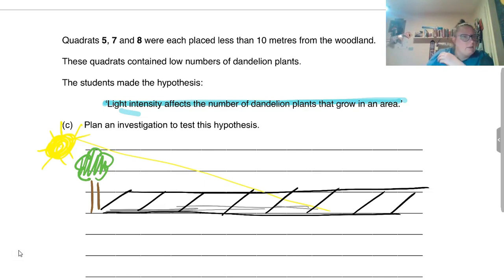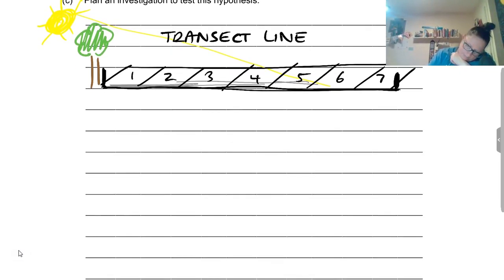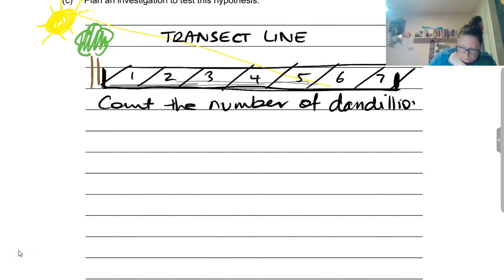So if we take our quadrat and we place our quadrats along a transect line from our trees, we should remember this phrase: transect. We can mark out our transect line with a piece of string. There's our little posts that we stick in, there's our piece of string, and these are our quadrats: one, two, three, four, five, six, seven. We're going to draw our transect line, we're going to place our quadrats, count the number of dandelions, but we're also going to have to make sure that we measure the light intensity in each quadrat.